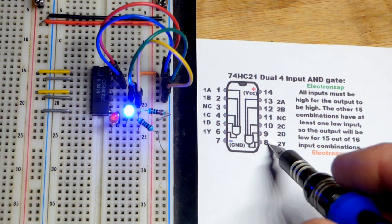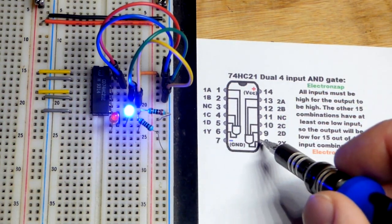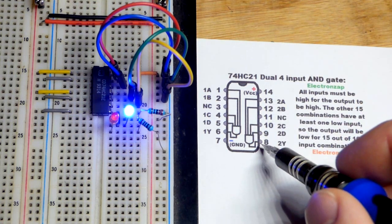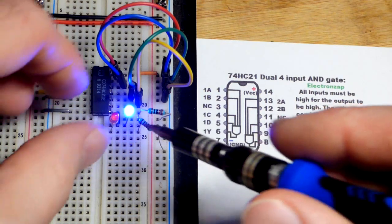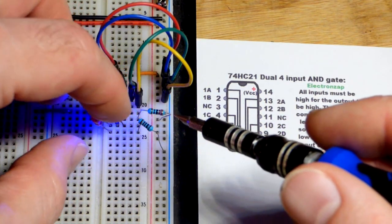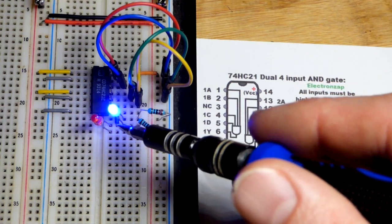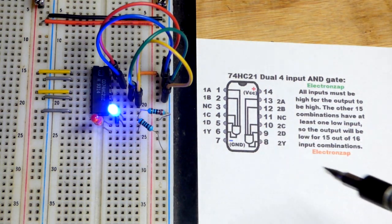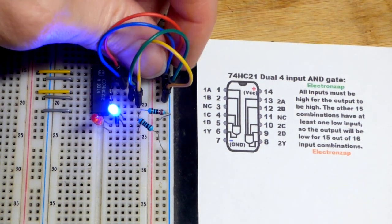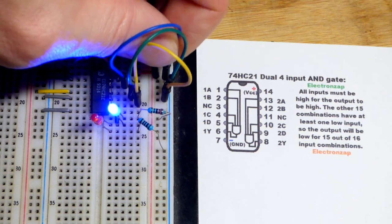Right now the output's low. That is the bottom pin, pin 8 over here. You work your way around counterclockwise to number it. So pin 8, that bottom one, there's a little jumper coming to where the two LEDs are. The blue LED, you can see positive side to the anode, short lead cathode goes to the jumper to the output. So the output is low right now.